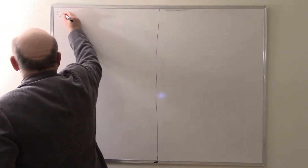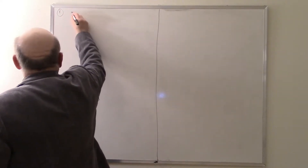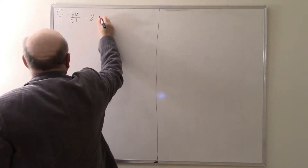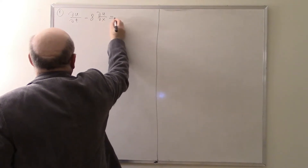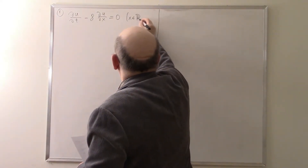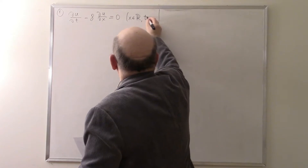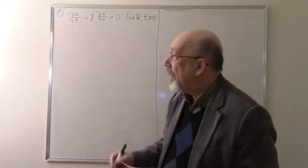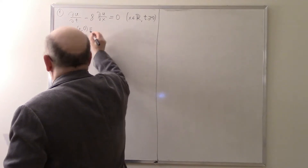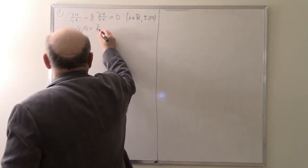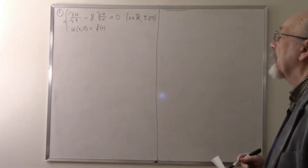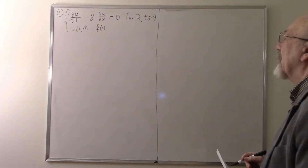Let me give you an example of the simplest equation: du/dt minus a·du/dx equals 0. Here x is in R, on the whole line, t is greater than or equal to 0, and initial condition u(x, 0) equals a given function f(x). So we have this equation and want to find its solution.